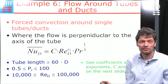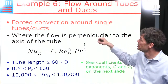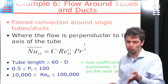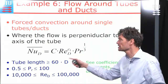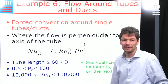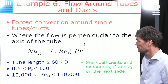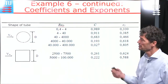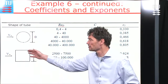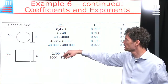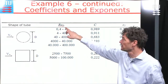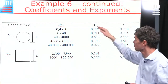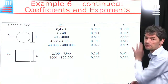Example six covers forced convection flow around a tube or duct. A formula similar to previous ones uses the Reynolds number and Prandtl number raised to powers with a coefficient, with ranges of validity. The coefficients and exponents are found in a table on the next slide, depending on whether the geometry is circular or rectangular. The diameter serves as the characteristic length for calculating the Reynolds number.